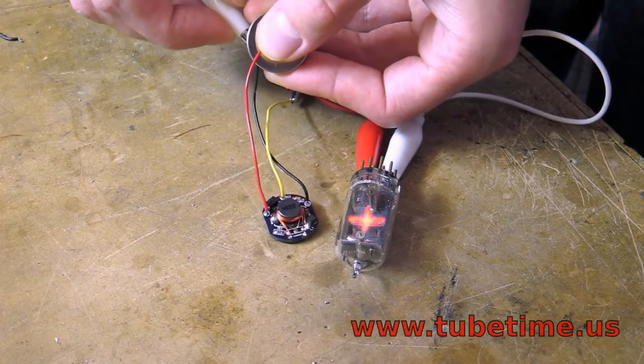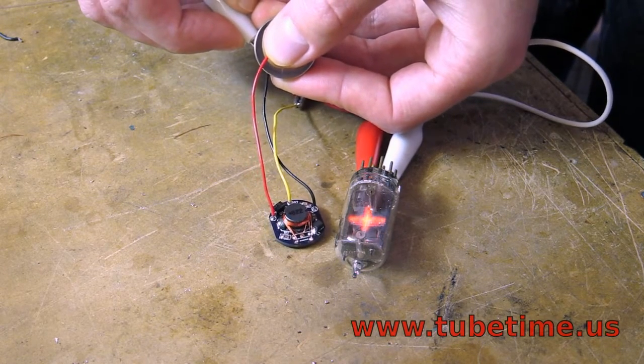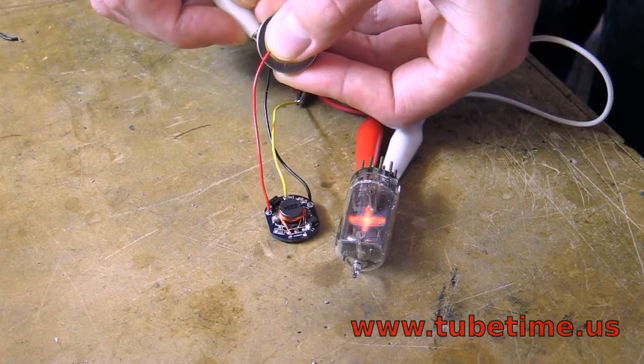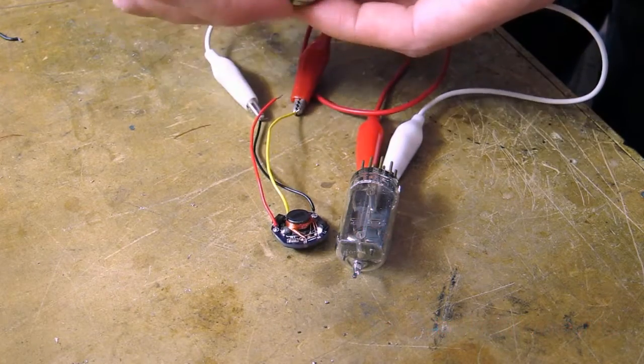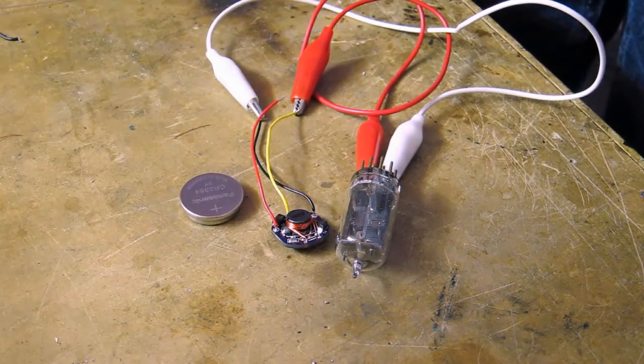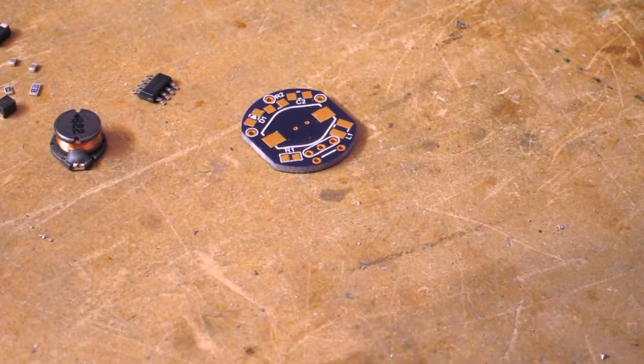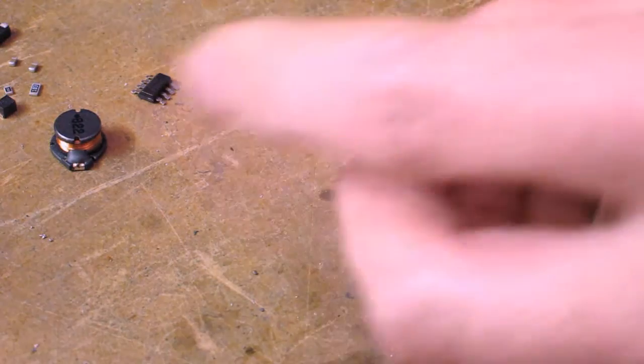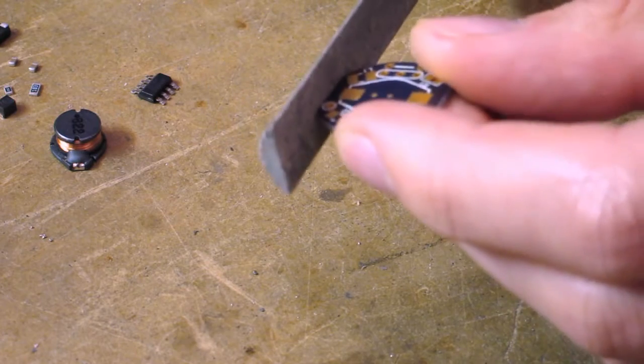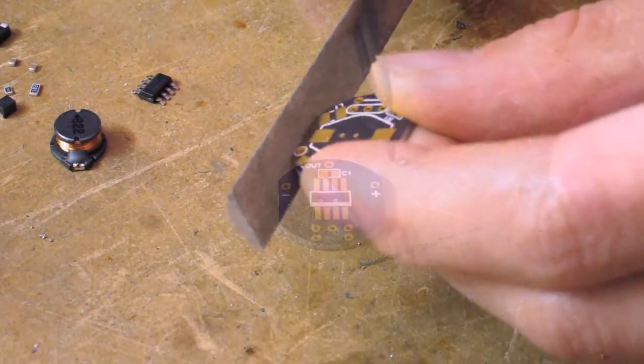My latest project is a miniature Nixie tube power supply that can operate off of a single coin cell. Let me show you how to build one of your own. First, order the PC boards from OSH Park. When you receive them, you'll need to use a file to clean the edges off to remove the burrs.